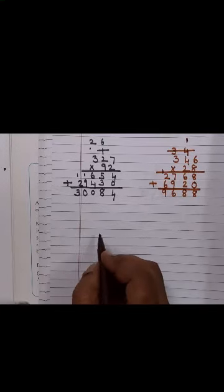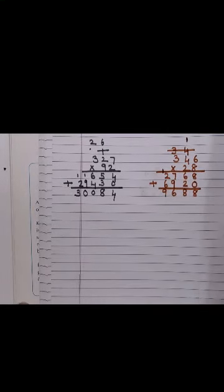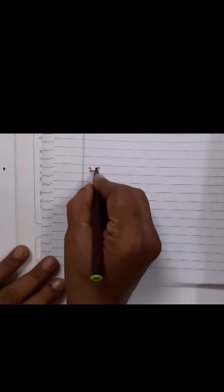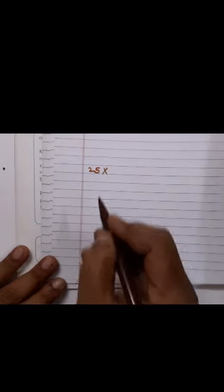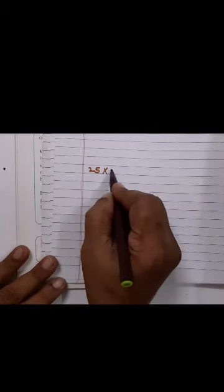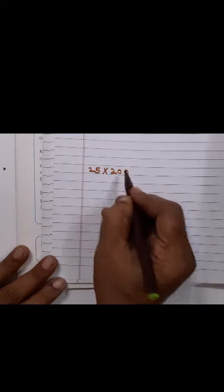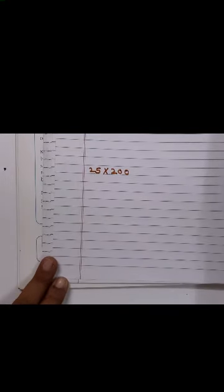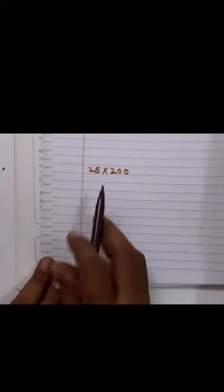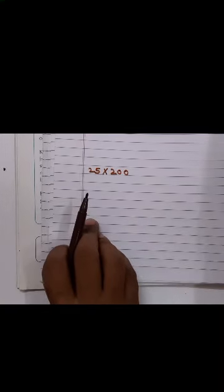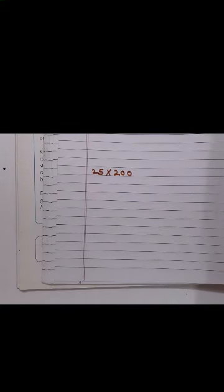Let's take 25 into 200. Now children, 25 into 2. So what will you do? First multiply 25 into 2, that's how much? 50.